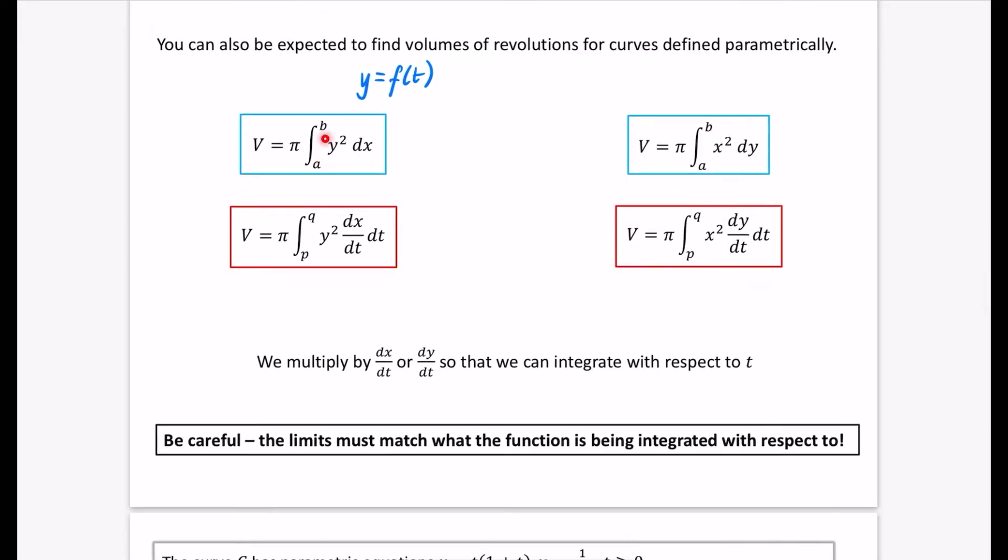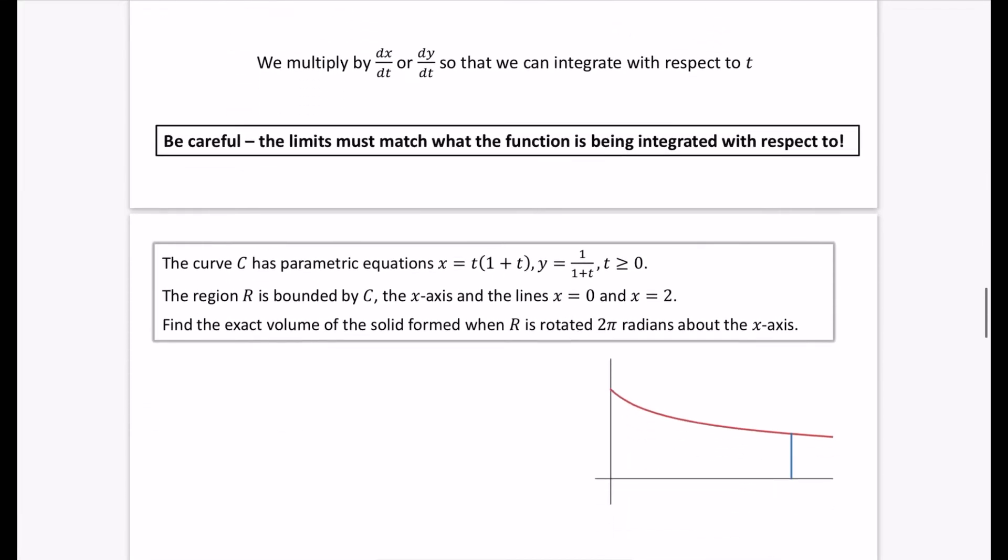There's one more thing that has changed. The limits were a and b. Those a and b limits were the limits of x, and these a and b limits were the limits of y. I've changed the limits to p and q. These p and q limits must be the t values. They must be the parametric ones which is the exact same thing as in normal maths. Be careful, the limits must match what the function is being integrated with respect to. So if you're doing parametrically the limits need to be the parametric values at those points.